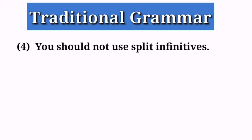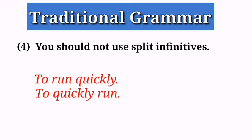Another traditional rule is that you should not use split infinitives. Traditional grammar says split infinitives should be avoided. A split infinitive occurs when an adverb or adverbial phrase separates the word 'to' from the verb in an infinitive phrase. For example, 'to run quickly' becomes 'to quickly run' — in this example the infinitive 'to run' is split by the adverb 'quickly'. Traditional grammar does not allow it.